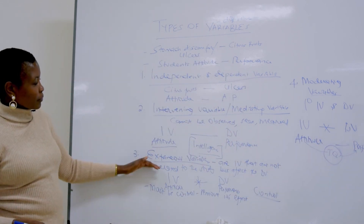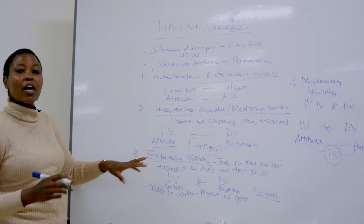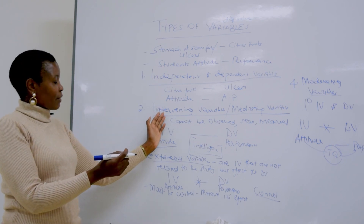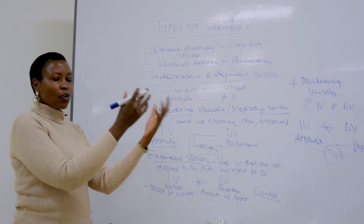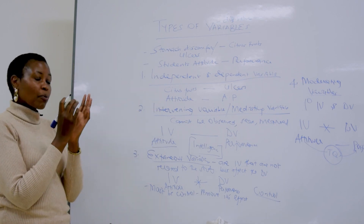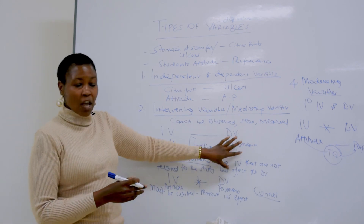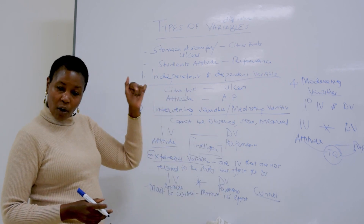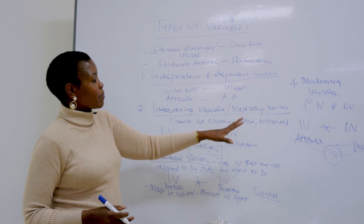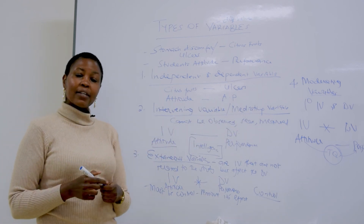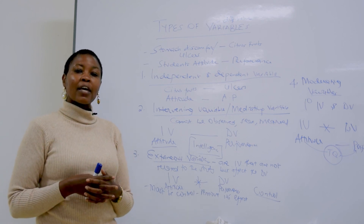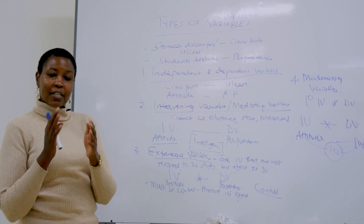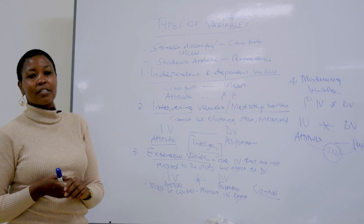Intervening variables are called confounding variables because they confound the change we see in the dependent variable with the intervening variable. Remember, you cannot see, measure, or observe them because they are hypothetical constructs, but they confound what we observe in the DV. Extraneous variables can also confound if they are not controlled, and moderating variables must be measured. So these are the key variables that social scientists measure in their study. Feel free to ask any questions regarding types of variables in the comment section. Thank you, and please subscribe to this channel, share and like this video with friends.